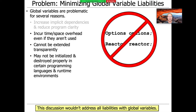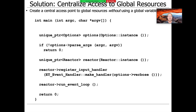We're not going to address all the downsides with global variables by using Singleton — just the three highlighted here: time and space overhead, the inability to extend transparently, and the inability to initialize and destroy things properly. The program dependencies and clarity issue is not really addressed by Singleton, which is why people don't like it. So let's take a look at what we're trying to do and dive into this example a bit more.